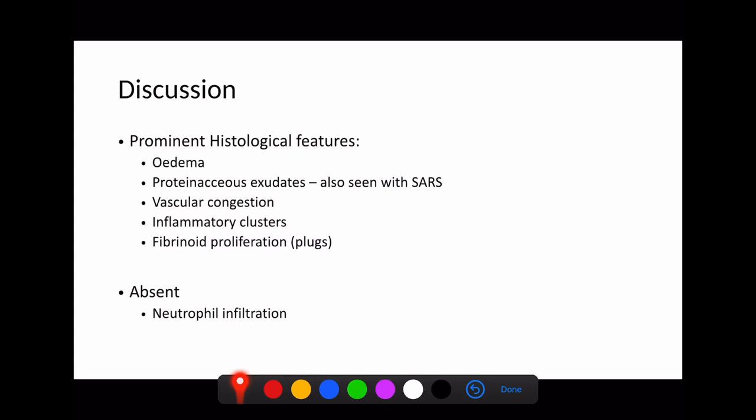The prominent histological feature seemed to be that of alveolar wall edema, lots of proteinaceous exudate, and this is very similar to what they saw with SARS and with MERS previously. There's inflammatory clusters and this fibrinoid proliferation with plugs in the alveoli. Interestingly, what was absent was this neutrophil infiltration. We think that's probably quite intuitive because there isn't a bacterial form to this. But certainly, neutrophil infiltration does not seem to be a prominent feature in this disease process, at least initially.